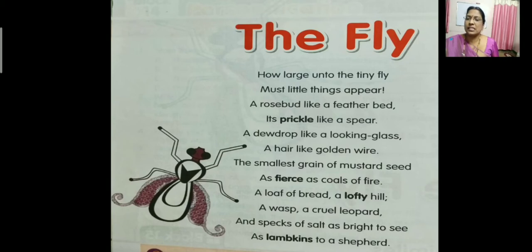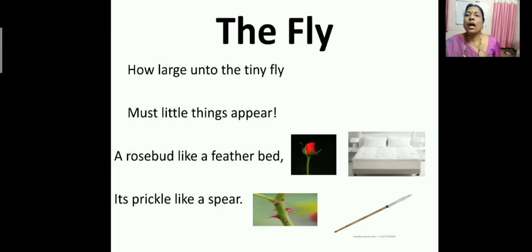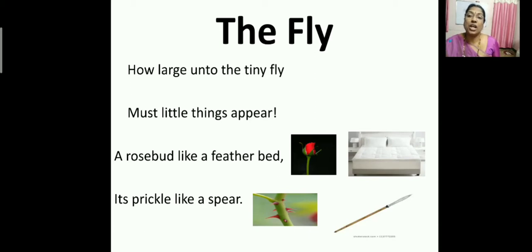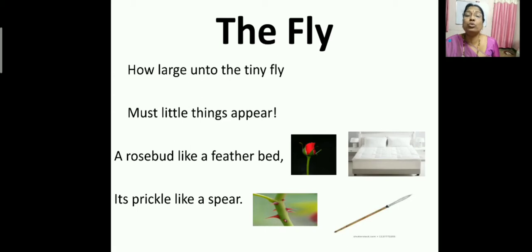Now we will discuss this poem — The Fly. 'How large unto the tiny fly must little things appear.' The poet has written the poem from the perspective of the tiny fly. How large things appear to the fly — tiny means very small. Little things appear very huge, very big, or very large to the fly.